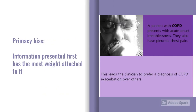Primacy bias is essentially where the information you get first has the most weight attached to it. For example, a patient with COPD presents with acute onset breathlessness — immediately that makes you think the breathlessness is due to the COPD. As you gather more information through your assessment, you've already placed a lot of weight on the COPD, almost to the detriment of other potential differentials. That's primacy bias.